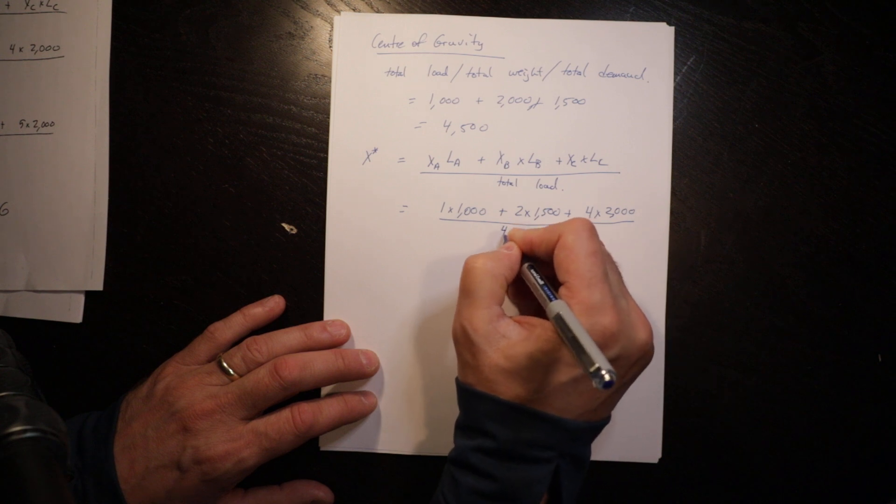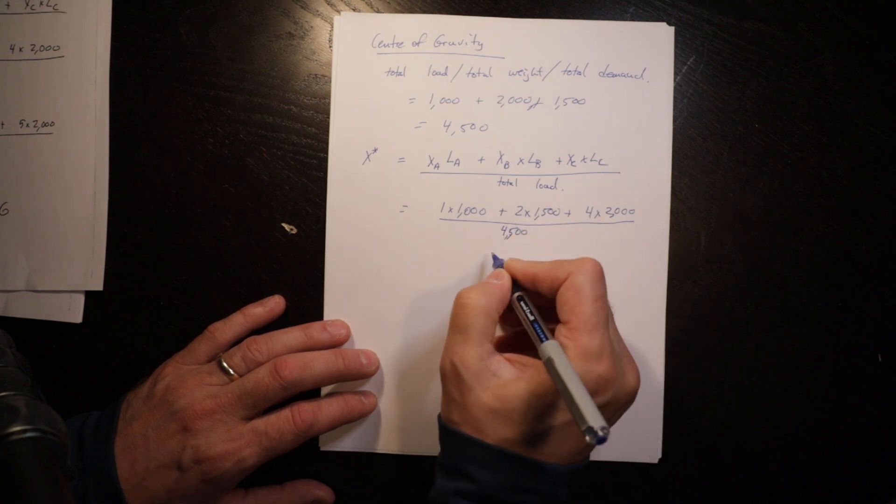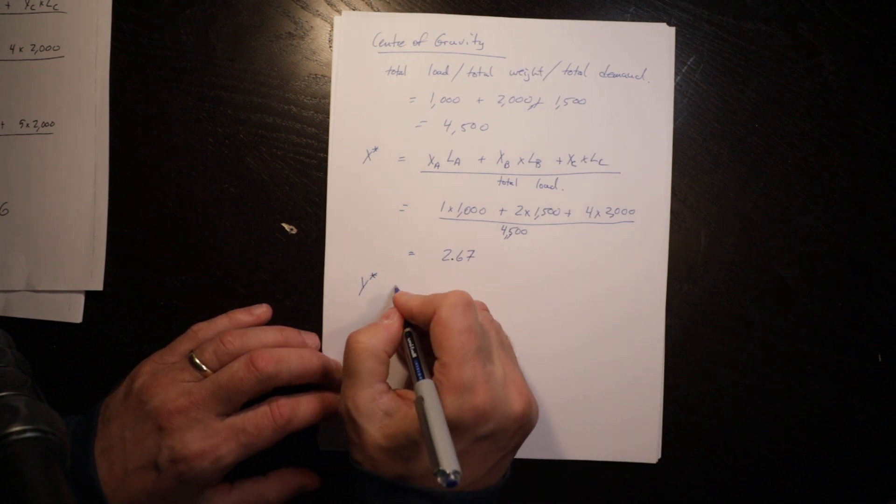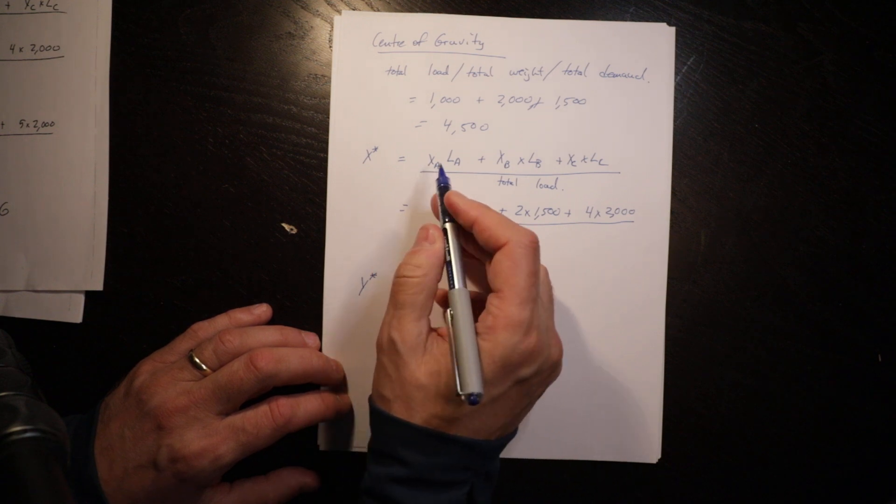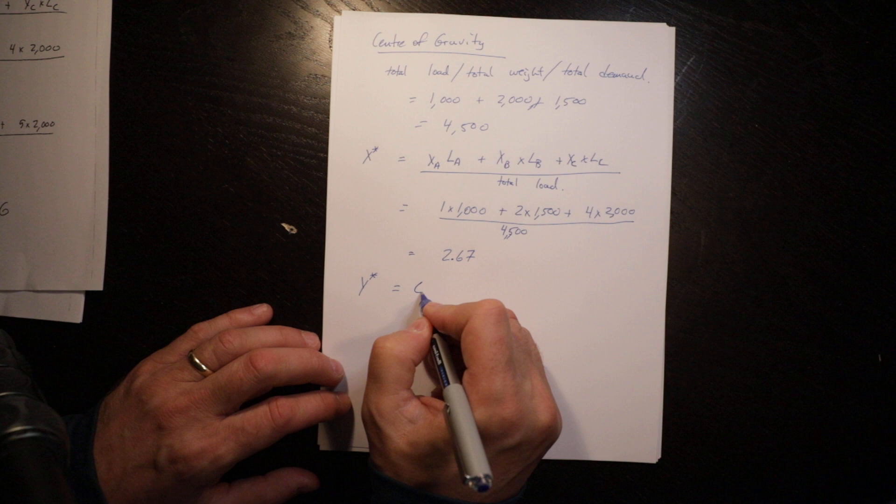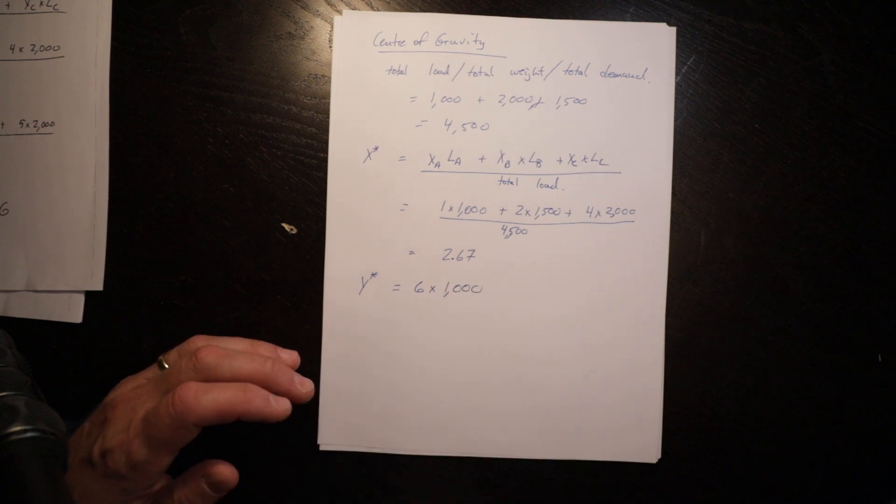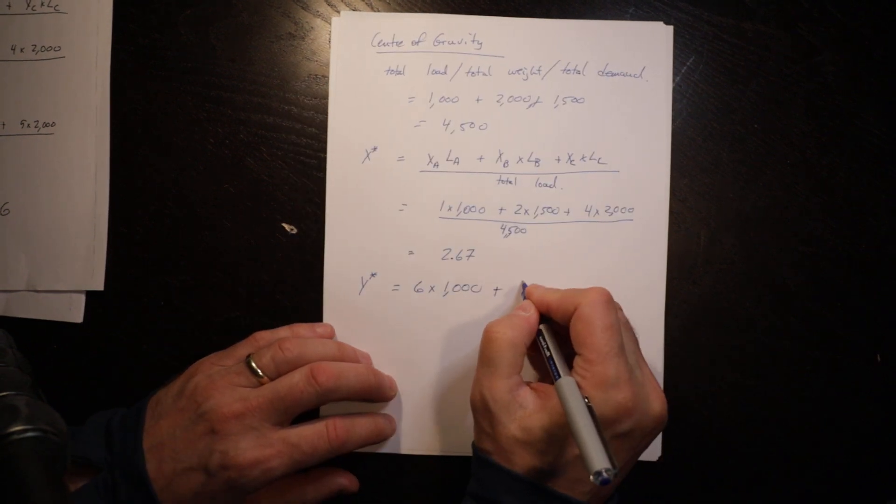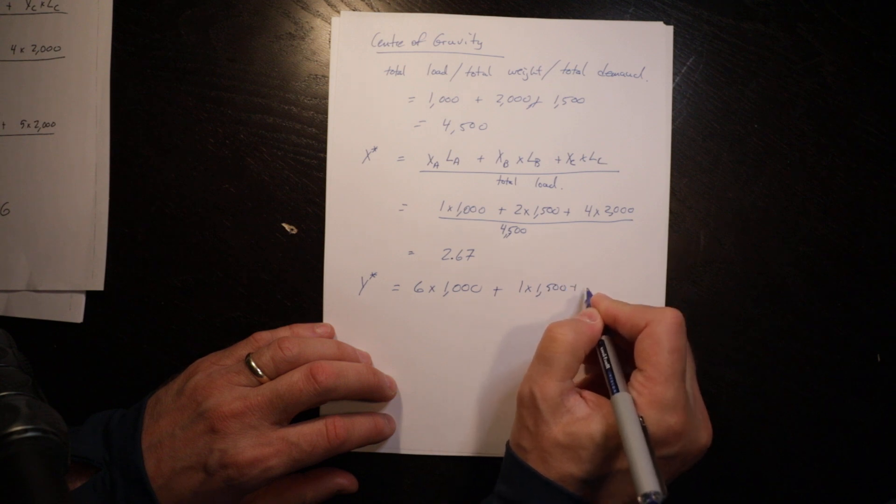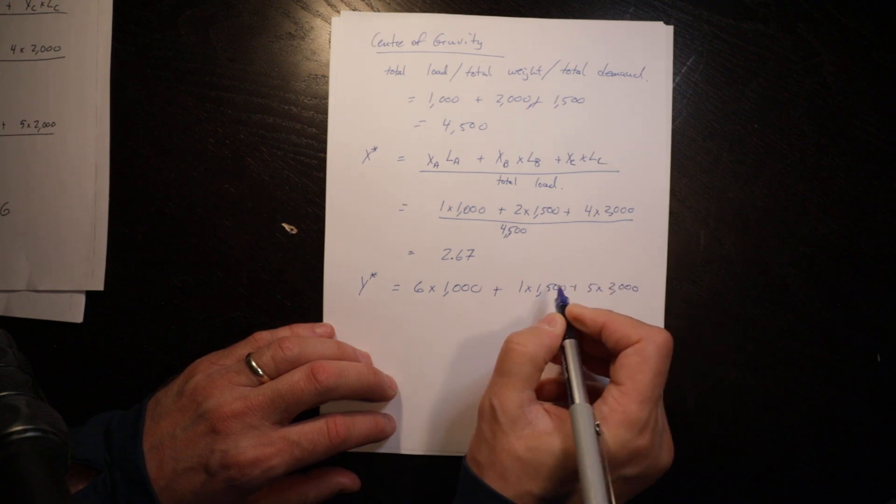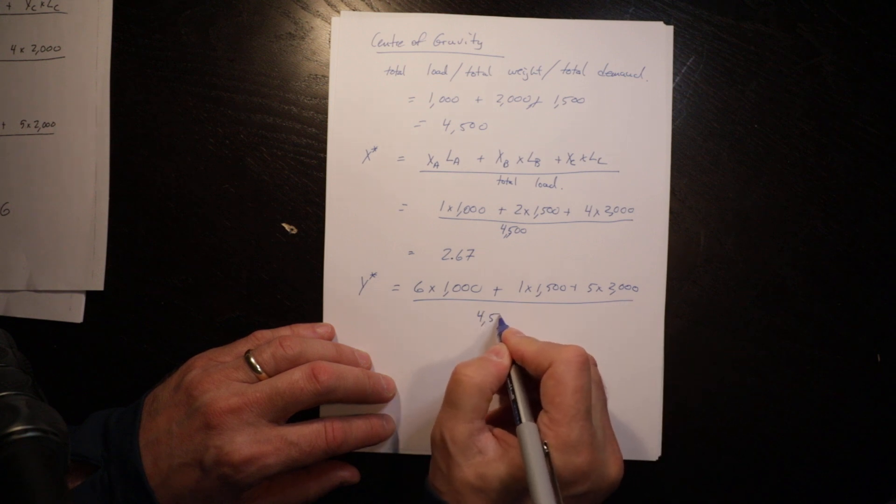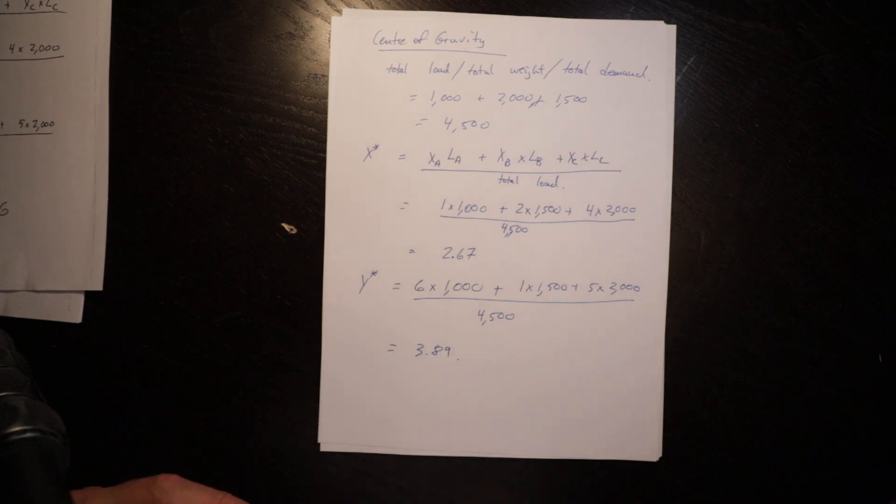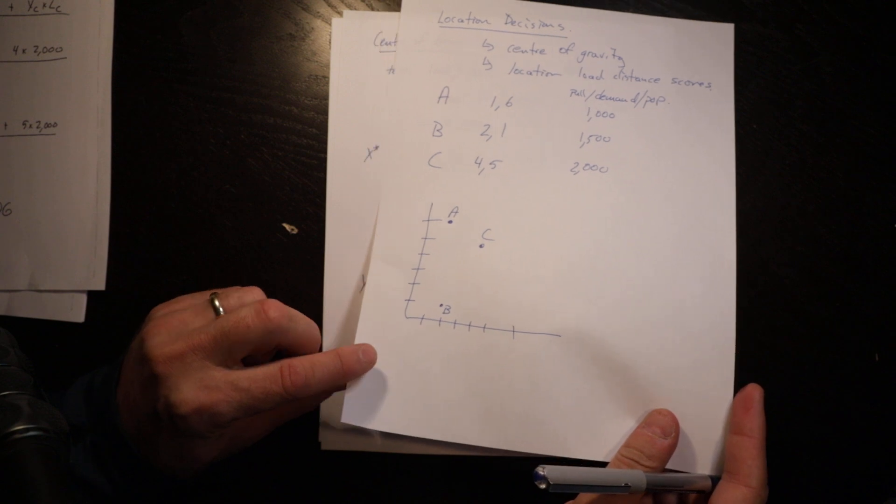Y star is the same thing except you look at Y. So that's 6 times 1,000 plus 1 times 1,500 plus 5 times 2,000, divided by 4,500, which equals 3.89. If we put that back on our original drawing, we would go 2.67, 3.89.